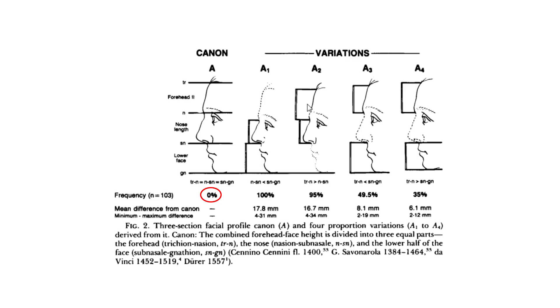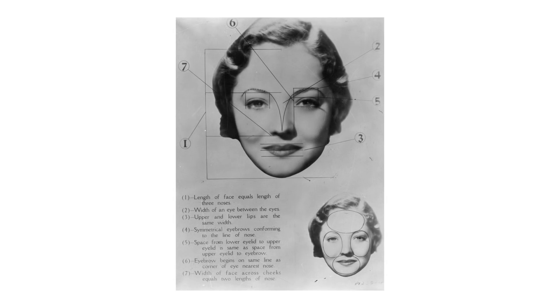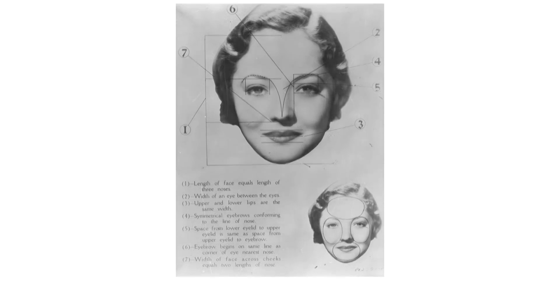What I think is actually going on is that we find perfect facial thirds attractive exactly for this reason. Because 0% of the population has it, or in this case the test population from Farkas' paper, the one extreme outlier that does have perfect proportion stands out very well.